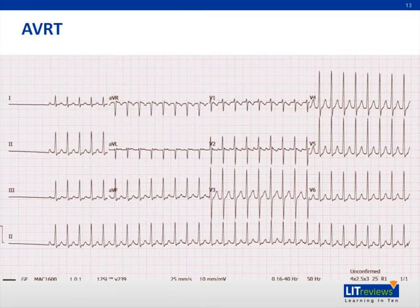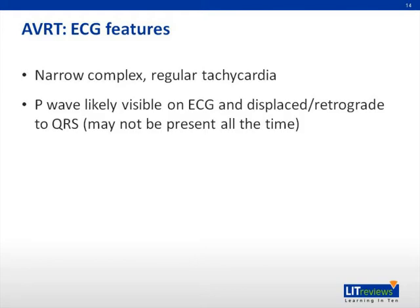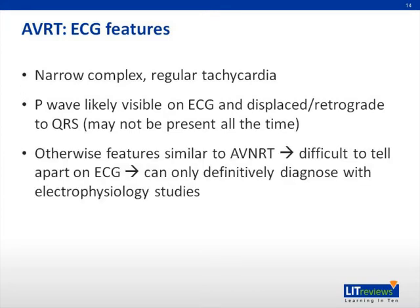This is a 12-lead ECG showing an AVRT. Notice that although it also shows a regular narrow complex tachycardia, there are retrograde P waves seen after the QRS complex, best seen in the inferior leads. The ECG features of AVRT are a narrow complex regular tachycardia with no P waves prior to the QRS complexes; however, a P wave may be seen retrograde to the QRS complex. Thus, it is difficult to tell AVRT apart from AVNRT on ECG alone. Definitive diagnosis requires electrophysiology studies, but treatment of both is the same, so in the emergency setting it is most important to recognize it as an SVT.